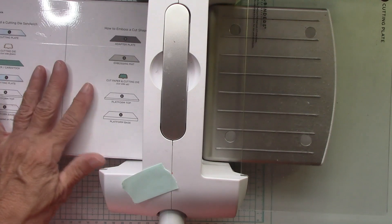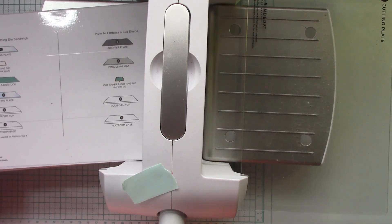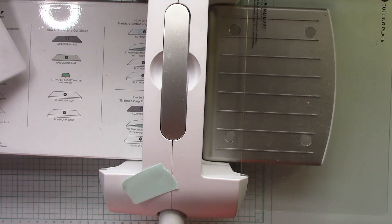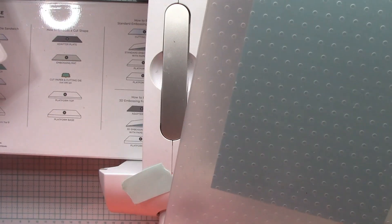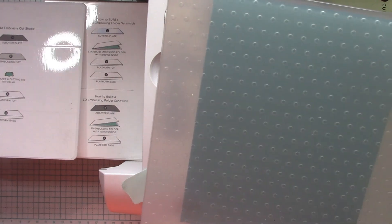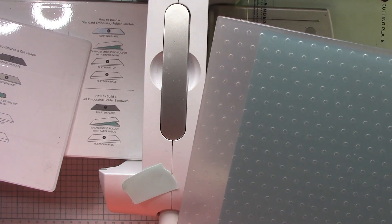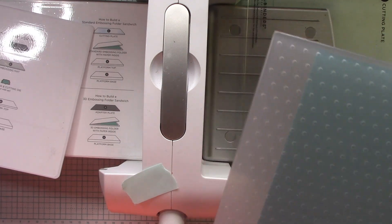So everything has a sandwich on here and all die cutting machines give you sandwiches. Okay. So we'll just use how to emboss the A and B plate. How to emboss, yes, how to build an embossing sandwich right here, the A and B plate, your standard embossing folder and then the cutting plate right there.